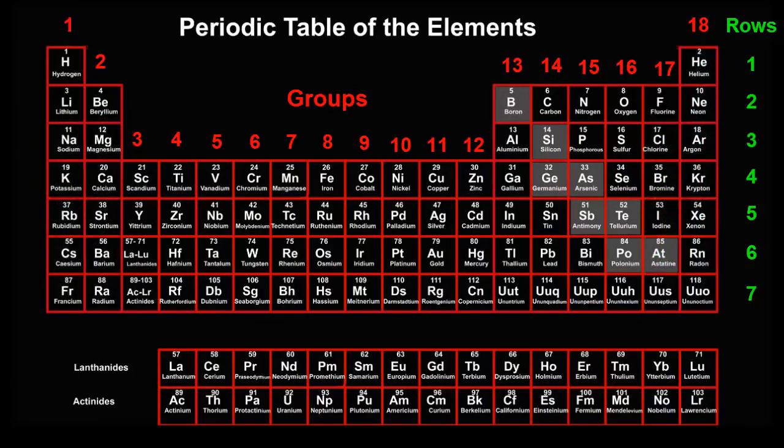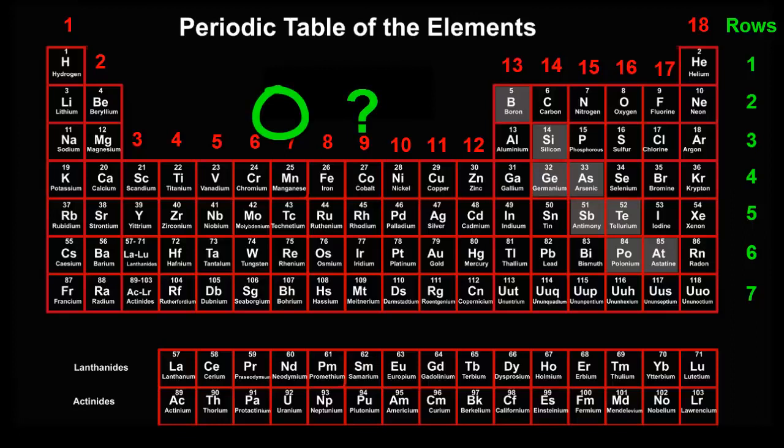Now you're ready to read the periodic table. What is the name of the element with atomic number 30? You just have to scan around and find 30. Zinc.